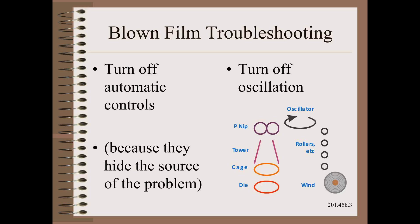In the specific case of oscillation, we must also turn it off. If the profile we are working on is gauge related, we will have to turn it off for much or all of a wound roll. The reason for turning off both automatic controls and oscillation is the same: they hide the very problem you are trying to find and fix.